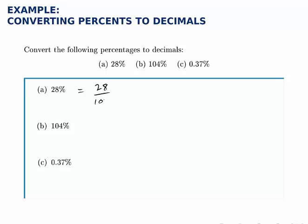So twenty-eight percent is twenty-eight divided by a hundred, which we can write as zero point two eight to get the decimal form.